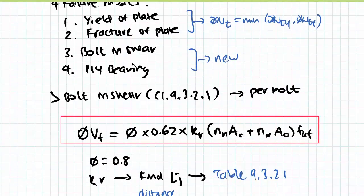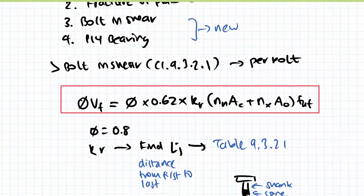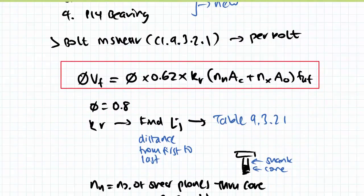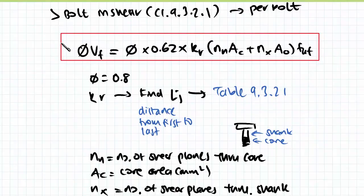So bolt shear. First, remember this is a per bolt capacity. So the more bolts you have, the stronger it is. So this is the equation we use. Remember the first variable we need is kr. We know phi equals 0.8. Kr can be found in table 9.3.2.1, and this is determined by our length between the first and last row of connectors.